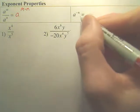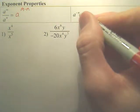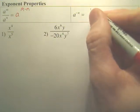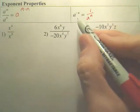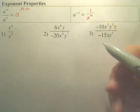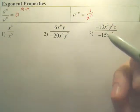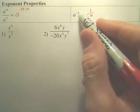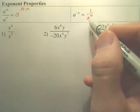And this other property is whenever you have a negative exponent, negative exponents basically mean this. You make it a positive exponent and switch it to the bottom. So if this is a to the negative n, this would be 1 over a to the n.